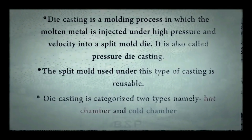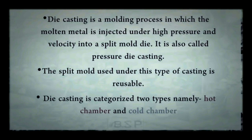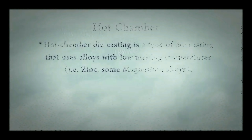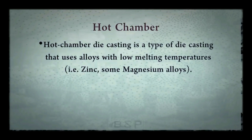Let's start with die casting. Die casting is a molding process in which the molten metal is injected under high pressure and velocity into a split mold die. Die casting is categorized into two types, namely hot chamber and cold chamber.